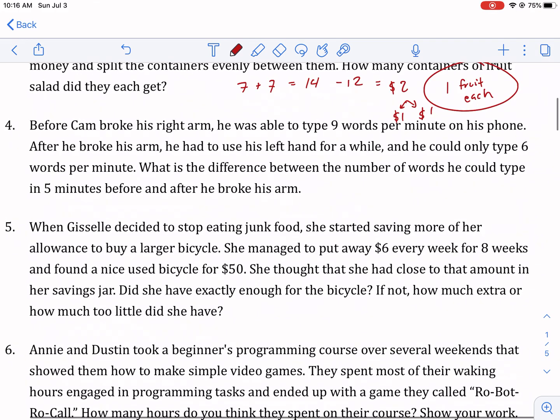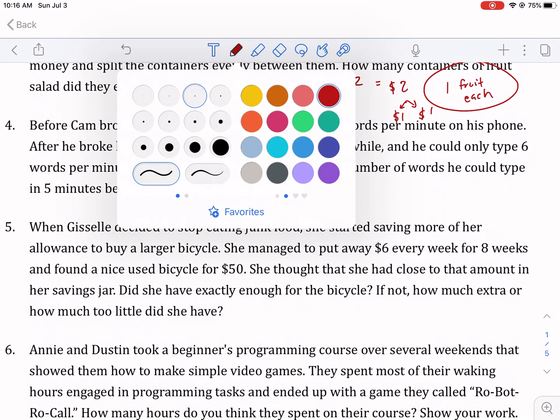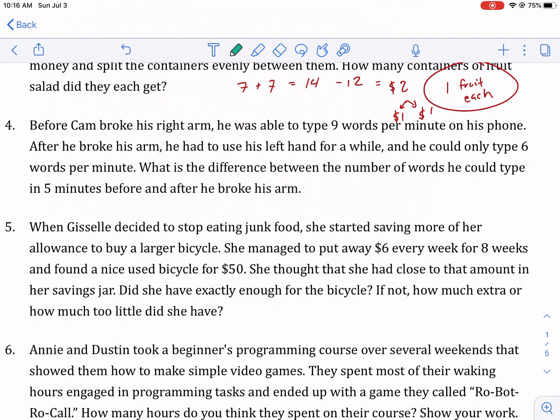Before Cam broke his arm, he was able to type nine words per minute. I'm going to switch to green. On his phone, after he broke his arm, he could only type six words per minute. What is the difference between the number of words he could type in five minutes before and after he broke his arm? So nine words, this is before, times five minutes. Nine words per minute times five minutes. That's 45 total words.